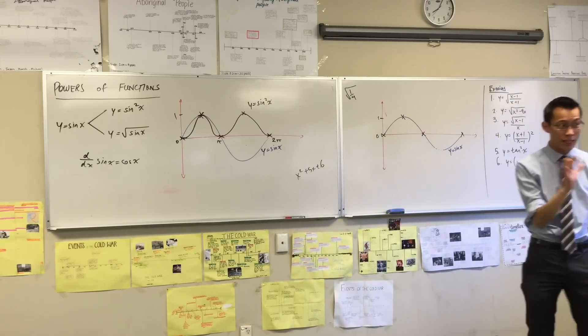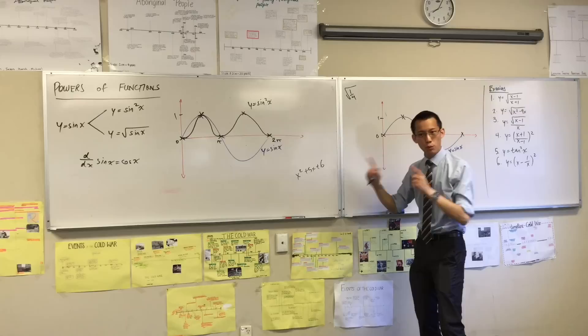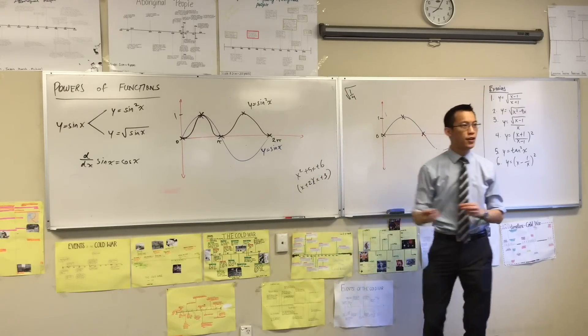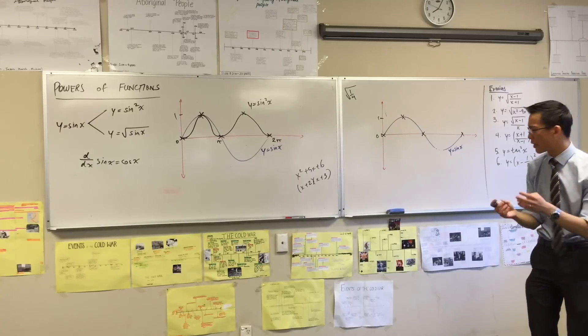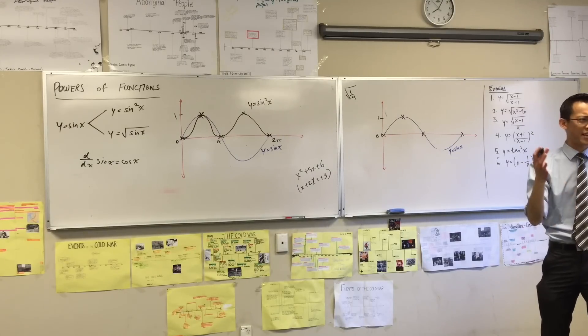So one example that people get really badly, even though you've learned to do it years ago, is when you factorize this. People get confused between the factorization, that pair of numbers, versus the roots, right? And people think, oh wait, that means the roots are 2 and 3? No, wait, the factorization is 2 and 3. Wait, which one's which?